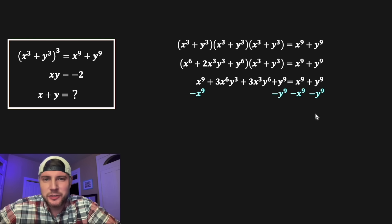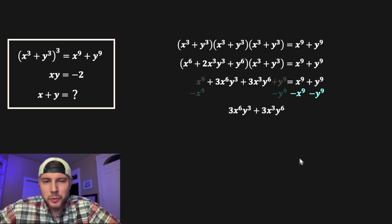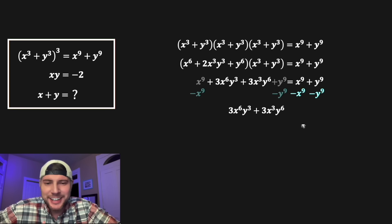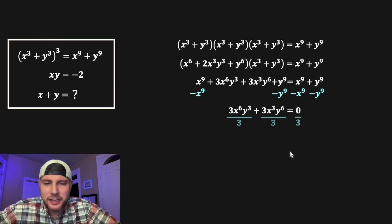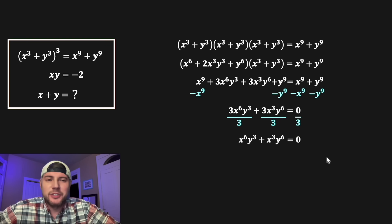We subtract x⁹ and y⁹ from both sides. On the left-hand side those terms cancel, leaving us with 3x⁶y³ + 3x³y⁶, and on the right-hand side everything cancels to zero. Dividing everything by three gives us x⁶y³ + x³y⁶ = 0.